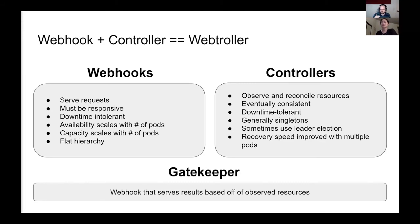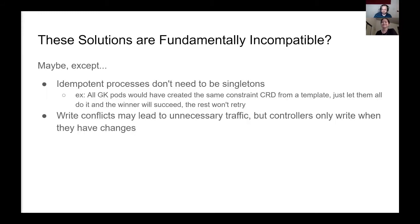Because Gatekeeper is a webhook that serves results based off of observed resources, it is a little bit webhook and a little bit controller. Because of this tension, they seem like incompatible models. This apparent conflict can be resolved by observing that idempotent controller processes don't need to be singletons. If more than one controller is watching the same resource and they both agree on the end state, the first controller to write the output will win the write. Other controllers will either have not yet processed that resource or will have their writes rejected. On retry, those controllers will see the correct state and will not attempt to reconcile further. This is similar to how Kubernetes leader election works and can lead to some extra traffic, but only when controllers need to write a change.